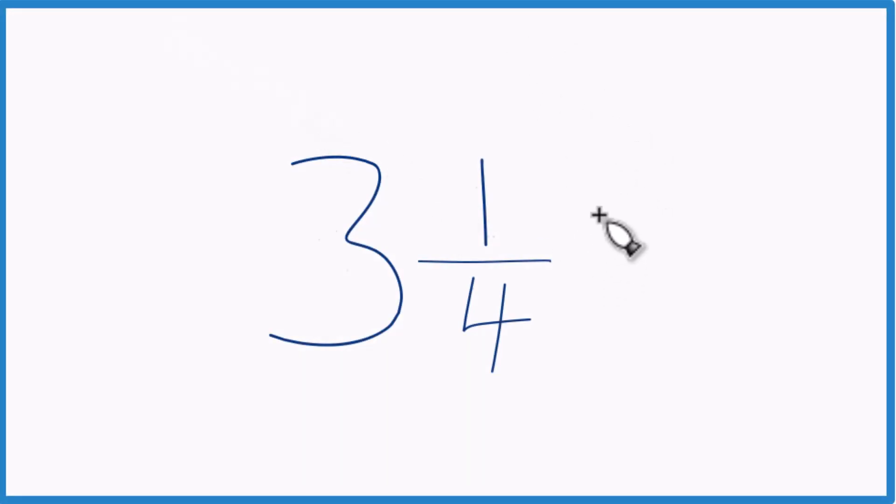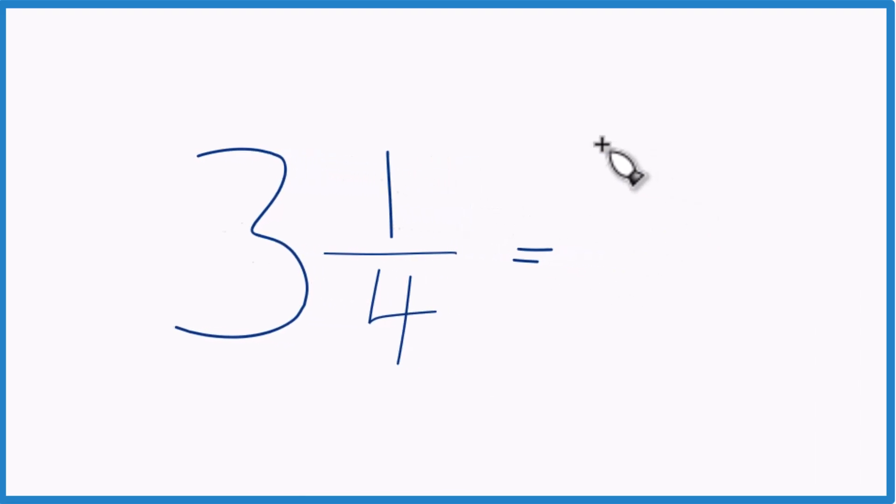Here's how you can convert the mixed number 3 and 1/4 to an improper fraction. You take the 3, the whole number, times 4. 3 times 4 is 12. 12 plus 1, that equals 13.